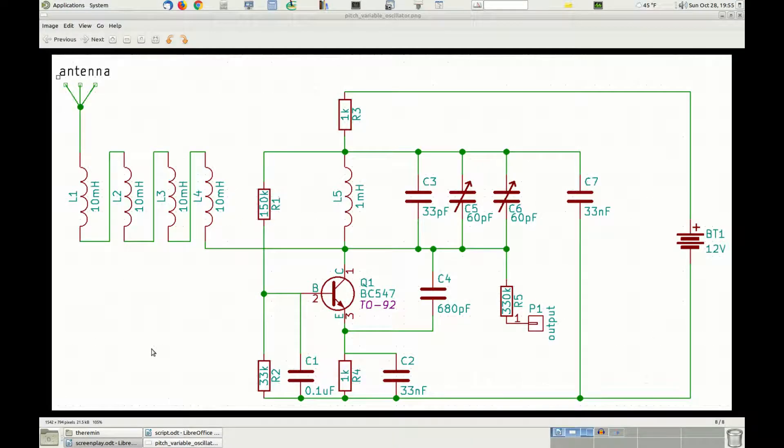The schematic of the pitch variable oscillator resembles very closely the one of the pitch reference oscillator, but with a couple of differences. Like the pitch reference oscillator, the pitch variable oscillator works in the LF radio band, otherwise known as low frequency band, and in particular just below the frequency of the pitch reference oscillator. This way, the heterodyne process will extract the difference of the frequencies of the two signals, and we will have a resulting wave that has a frequency in the audio band.